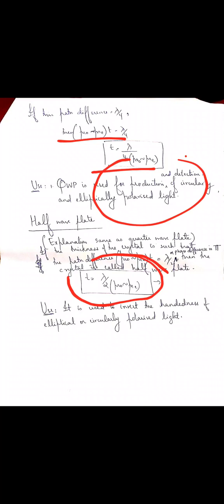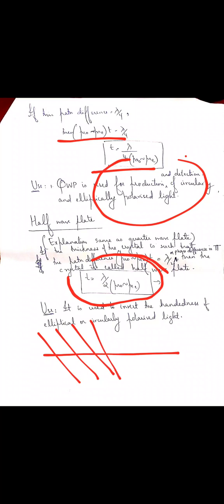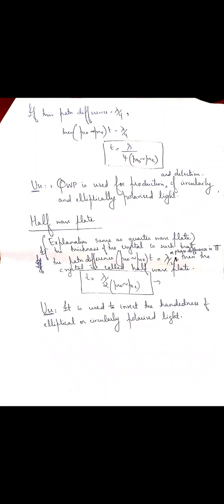You can convert a left-handed circularly polarized light to a right-handed circularly polarized light or vice versa, or change a right-handed elliptically polarized light to a left-handed one. If the light is linearly polarized and inclined at 45 degrees with the optic axis, when it comes out, its plane of polarization will be rotated by 90 degrees. So this is the function of a half wave plate. I think quarter wave plate and half wave plate is clear to all of you. If you have any doubts, please do contact. Thank you.